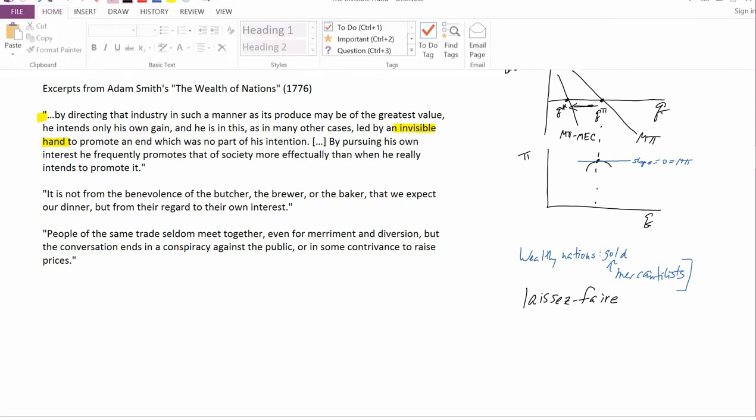So this invisible hand laissez-faire philosophy is something that Adam Smith started. Another quote of his that goes along the same lines is this second one. It is not from the benevolence of the butcher, the brewer, or the baker that we expect our dinner, but from their regard to their own interest. So, in other words, we depend on the butcher, the brewer, and the baker to be selfish and to maximize their own profit. And the activities that they undertake in order to maximize their own profit are exactly those activities which enable us to purchase meat from the butcher, beer, I guess, in that time from the brewer, and bread from the baker and have a dinner.